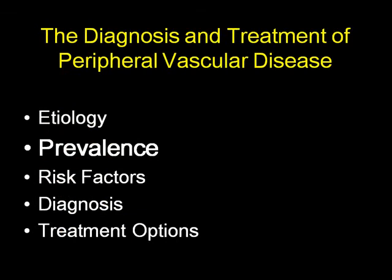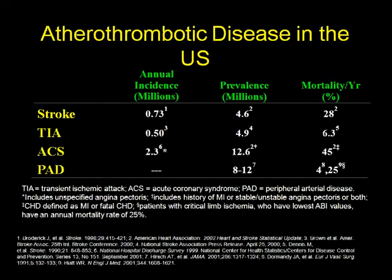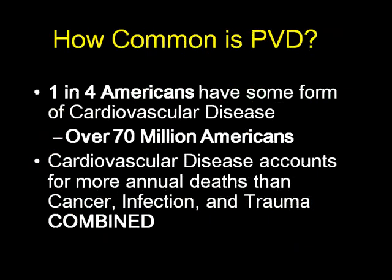Coming to prevalence — as you know, the prevalence of acute coronary syndromes is significantly high. The prevalence of peripheral arterial disease is also quite significant, as you can see in this table. One in four Americans have some form of cardiovascular disease, and that number is probably going to be one in three pretty soon. Cardiovascular disease accounts for more annual deaths than combined cancer, infection, and trauma.